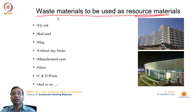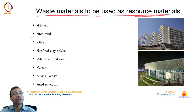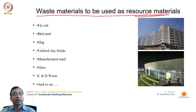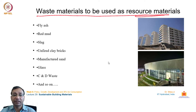How can these alternatives be evolved? Here is a list of alternative materials that can be used as main resource materials but are actually byproducts — waste from some other product. These include fly ash, red mud, slag, unfired clay bricks, manufactured sand, glass, and several other materials which are being adopted in the construction industry as alternative materials.